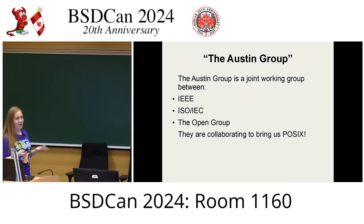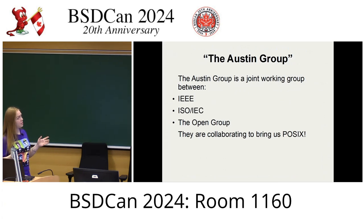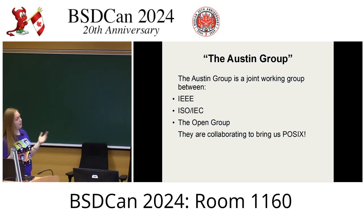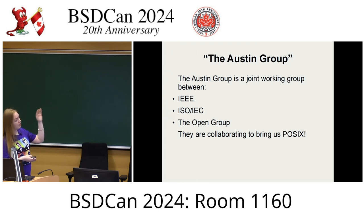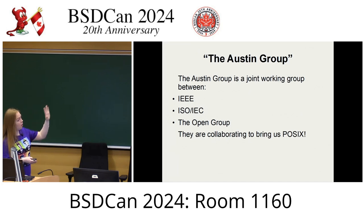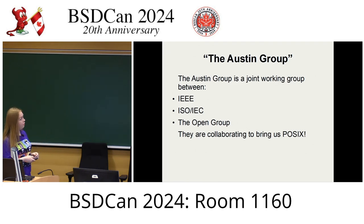What is the Austin Group? If you search for POSIX, you'll sometimes see this group come up. They're a joint working group between the IEEE, the ISO, and the Open Group — all of these bodies collaborating to bring us POSIX. It is a very collaborative effort at this point in 2024.